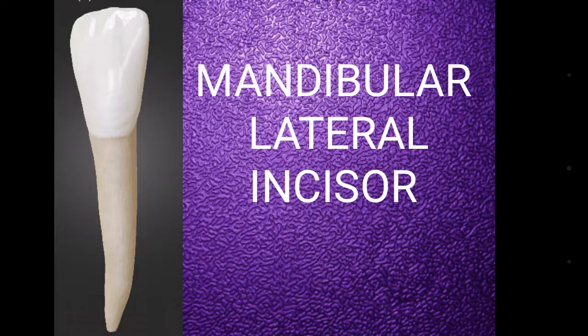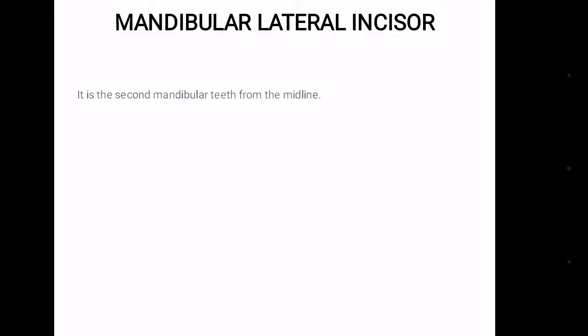Mandibular lateral incisor is the second mandibular tooth from the midline. It resembles the mandibular central incisor so closely that only a brief description of each aspect is required. I suggest you watch my video on mandibular central incisor first. The link is given in the description.